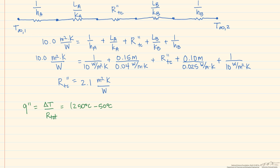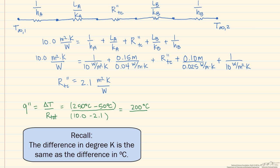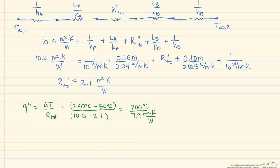But here our total resistance is going to equal our 10 minus our 2.1 or 7.9 meters squared kelvin per watt. And when we calculate our flux, we find that it's equal to 25.3 watts per meter squared.